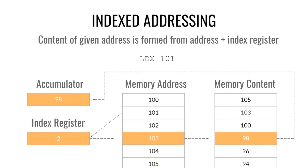Index addressing uses something called the index register to build its actual address. So with LDX 101 and the value 2 in the index register, we add those two together to get 103, then pour that into the accumulator. Index addressing can be used to reference data in an array — for example if data is stored at every third element, we can put three in our index register and use that to offset and get to the data we want, such as the third, sixth, and ninth elements.